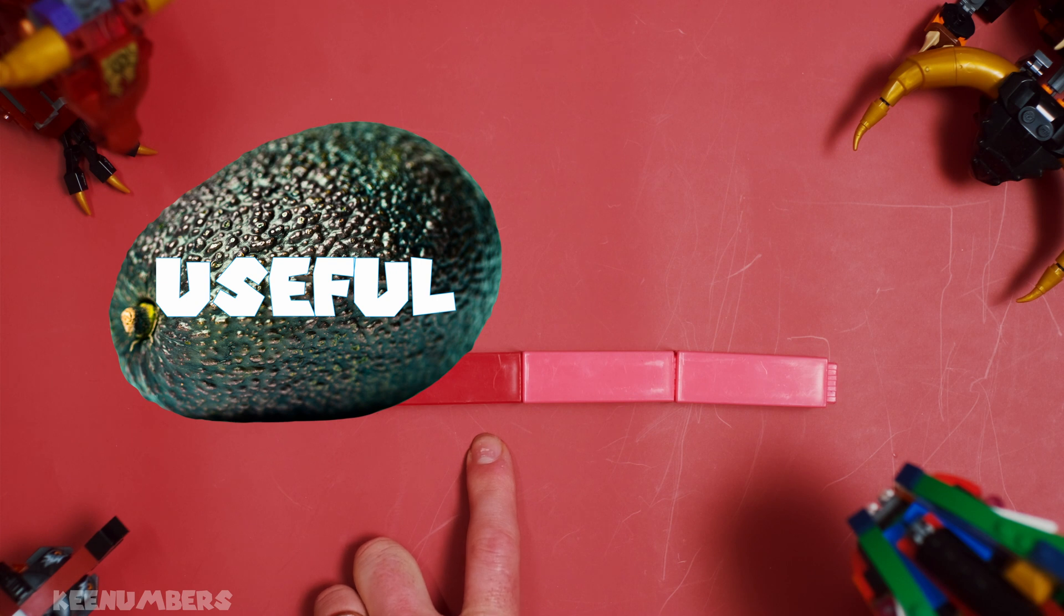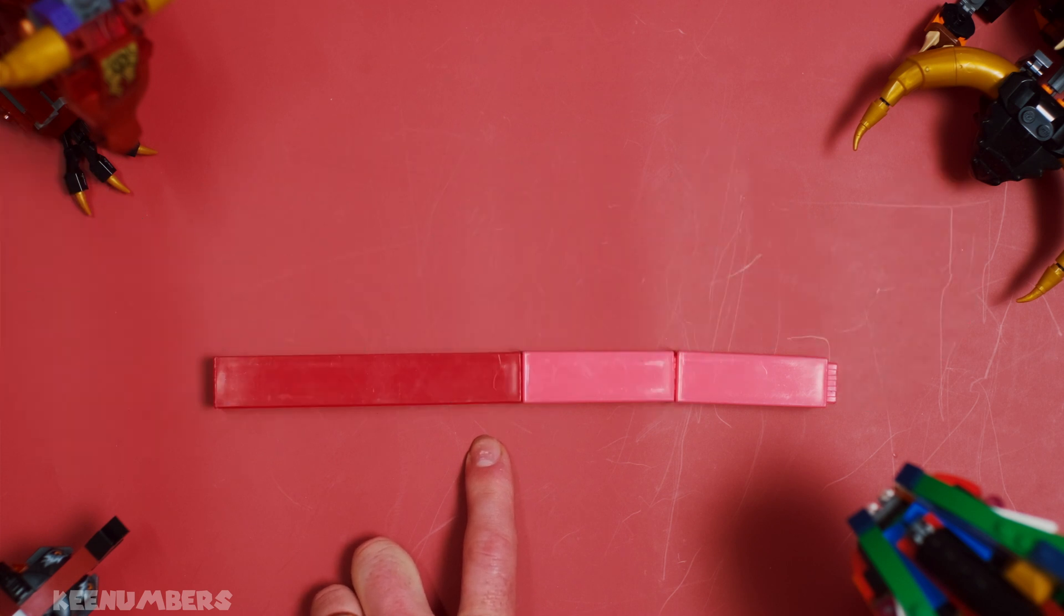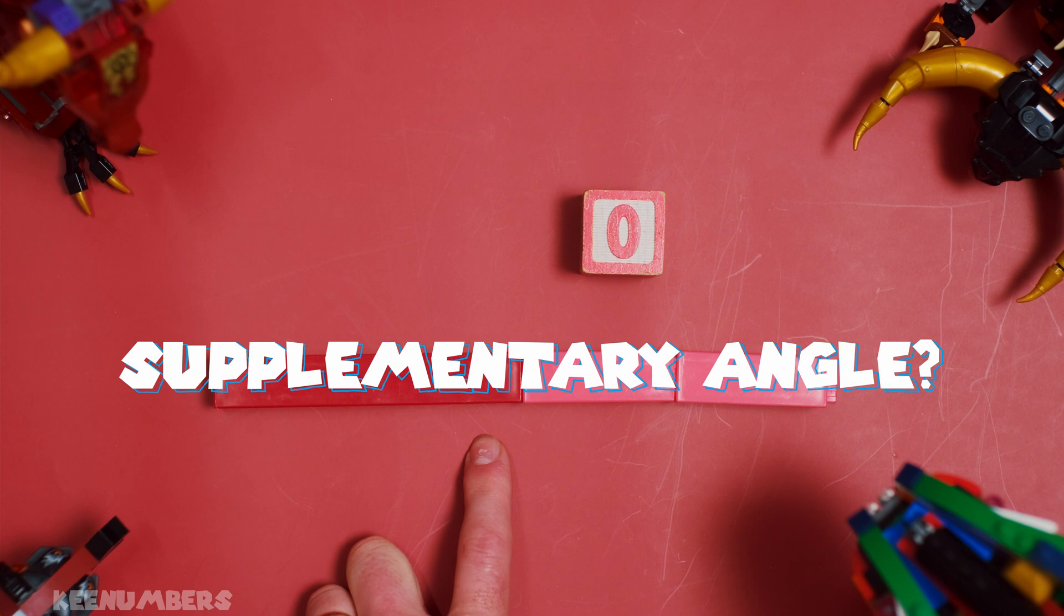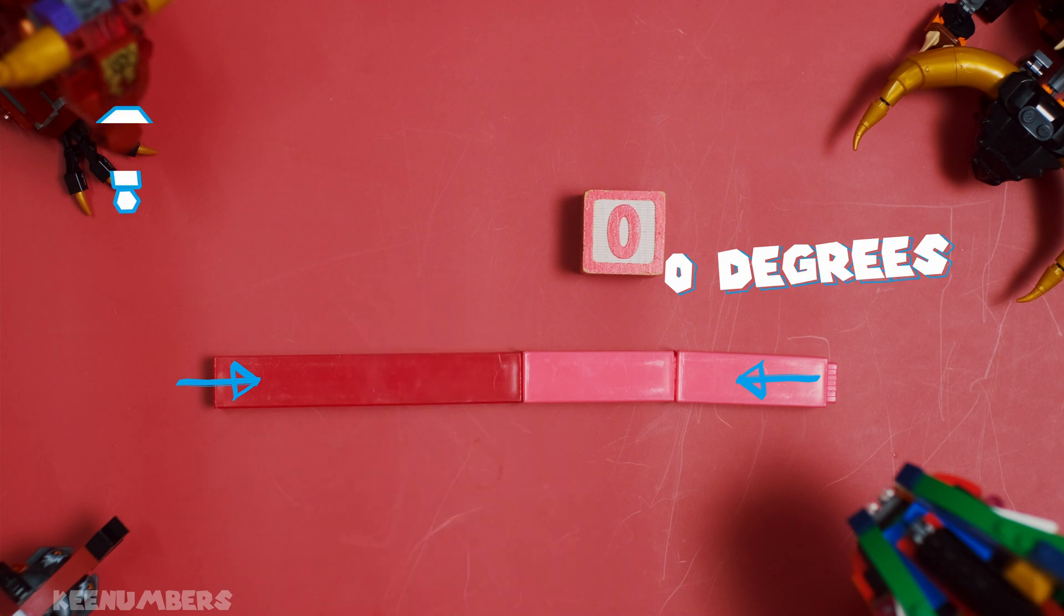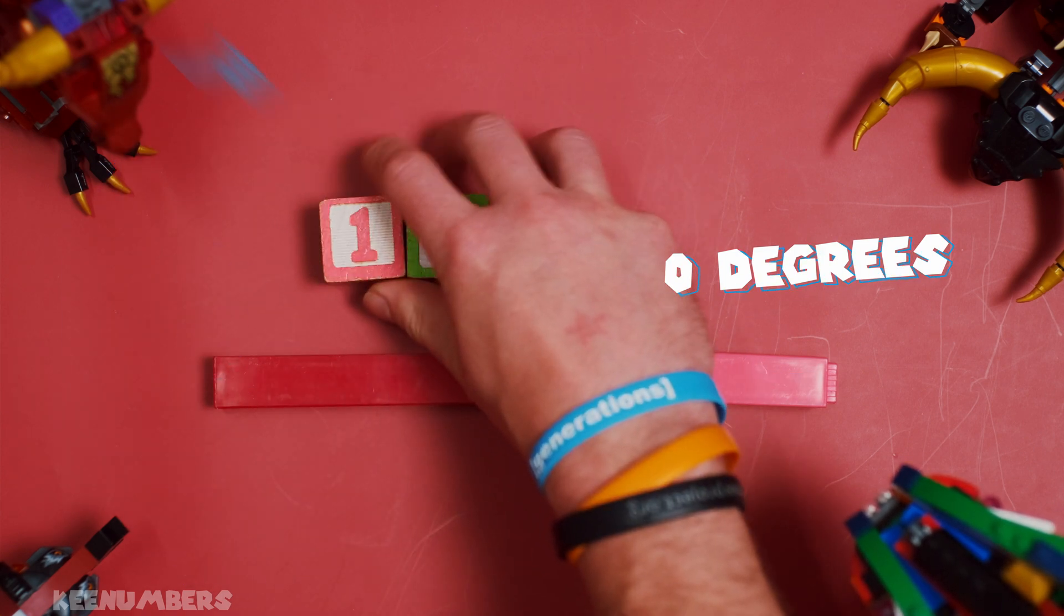What is the supplementary angle of zero degrees? This is our trick question. The difference between zero and 180 degrees is just 180 degrees. That's a trick question.